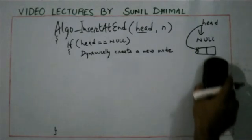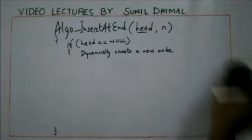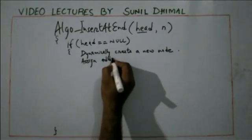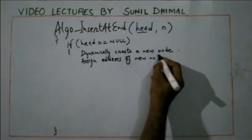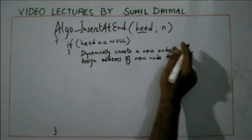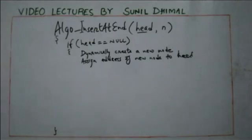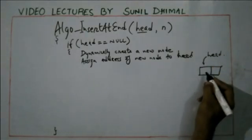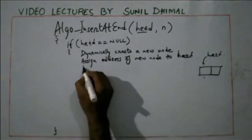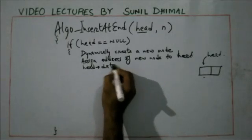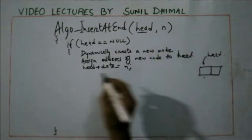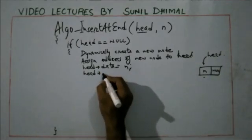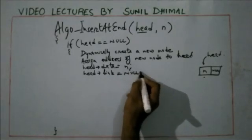Then you assign the address of the new node to head. So head would be pointing to the new node. You have created the new node and head is pointing to it. The first field is called data, so data of head is the element N given as input to your algorithm. Its link should be made null, so link of head equals null. This is the corner case.